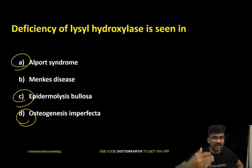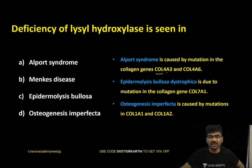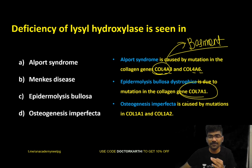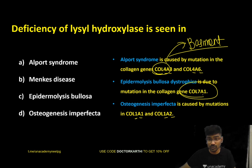The other options in that question are collagen disorders. Alport syndrome involves mutation in collagen 4A3 and 4A6 — type 4 collagen is present in the basement membrane. Epidermolysis bullosa dystrophica involves mutation in collagen 7A1. Osteogenesis imperfecta is due to a defect in type 1 collagen, involving genes 1A1 and 1A2.